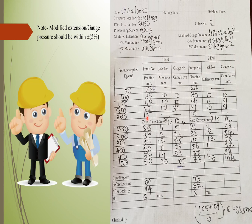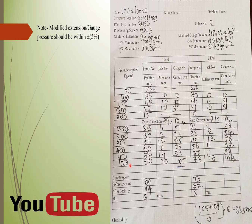Once the elongation from 0 to 50 is determined, pressure application starts again from 200 kg/cm² at 50 kg/cm² intervals until the required elongation is reached. Please note: if the required gauge pressure is reached first and the elongation is not yet reached, pressure is carried up to plus five percent more and the corresponding elongation is noted, and vice versa.